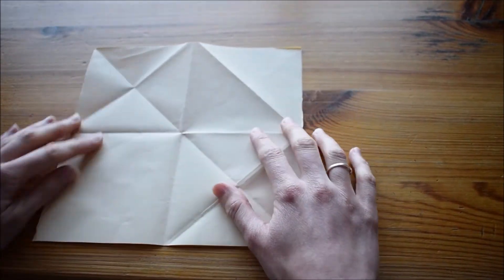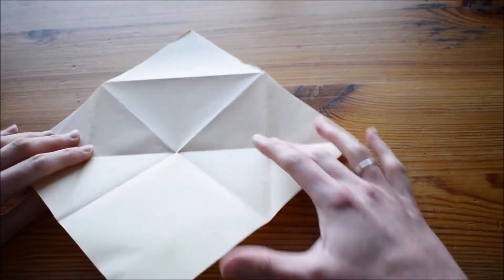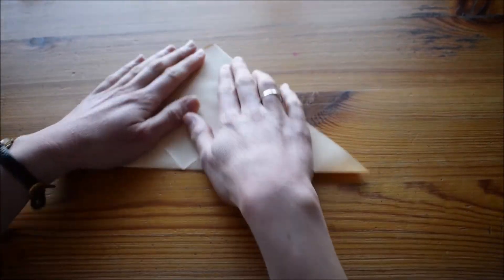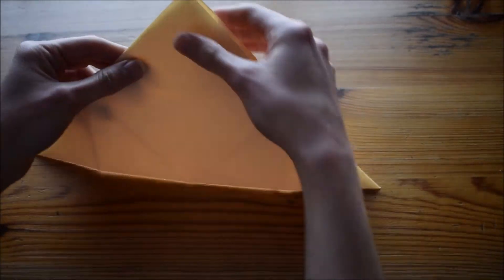So I've already folded this up once, I'll just refold it to show you. What you need to do is take your square of paper and fold it in half so the corners are together.